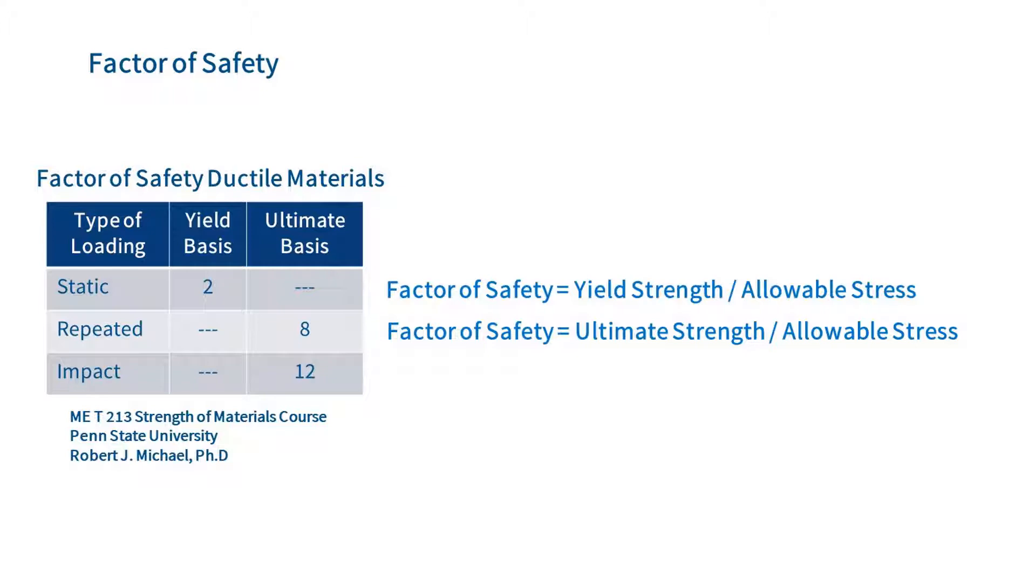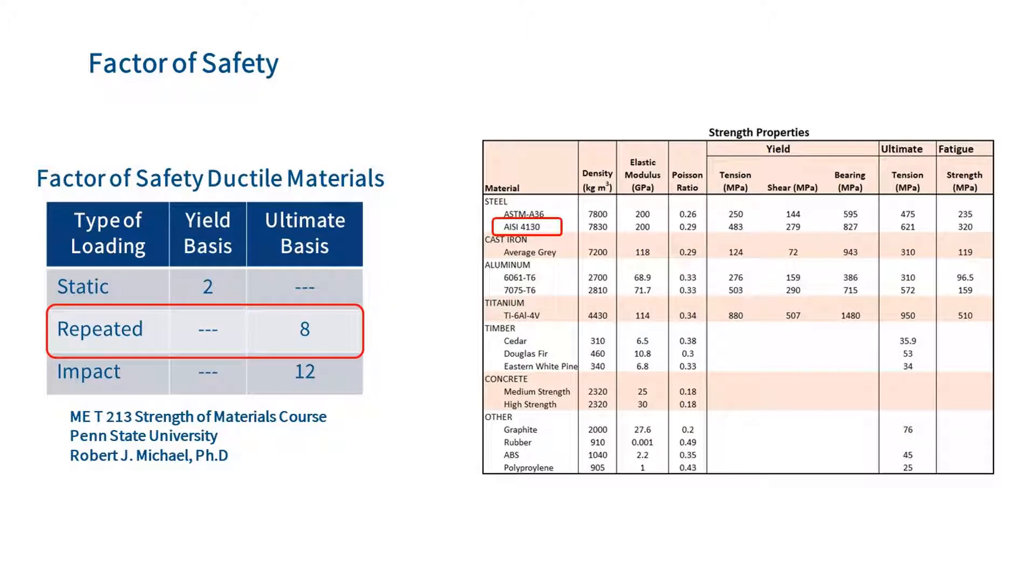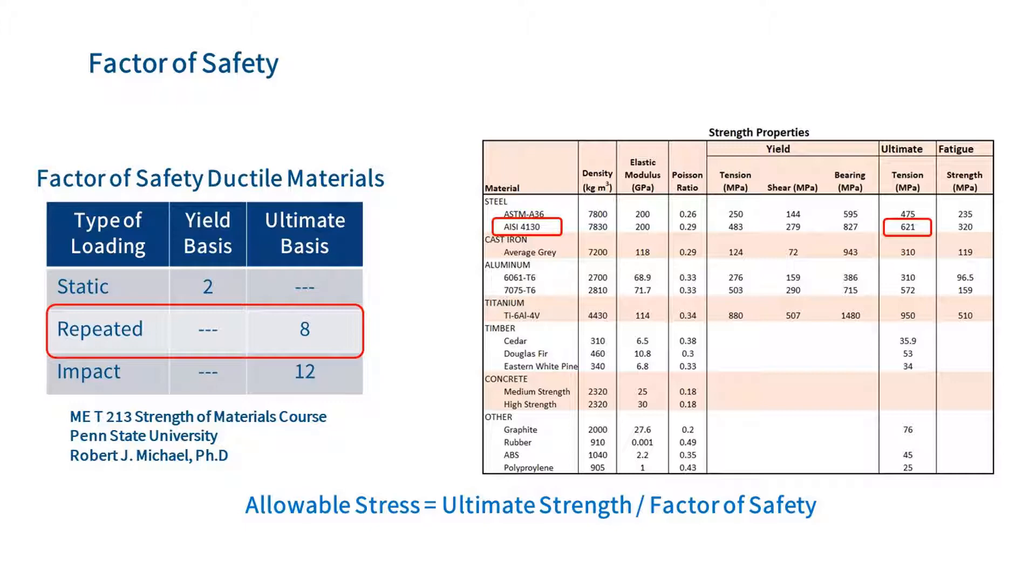This is best demonstrated using an example. We will design a part using 4130 steel that is subjected to a repeated load. Using the definition of the factor of safety, we can solve for the allowable stress. So, the allowable stress is 77.6 MPa.